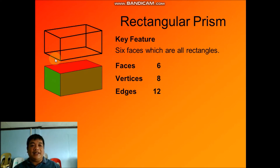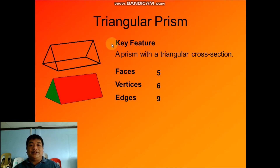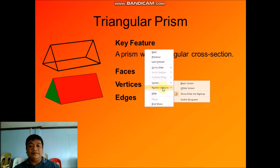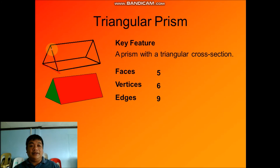What are the key features of a rectangular prism? It has six faces and all are rectangles. It also has eight vertices and twelve edges. For the triangular prism, it has five faces, six vertices — one, two, three, four, five, six — and nine edges.